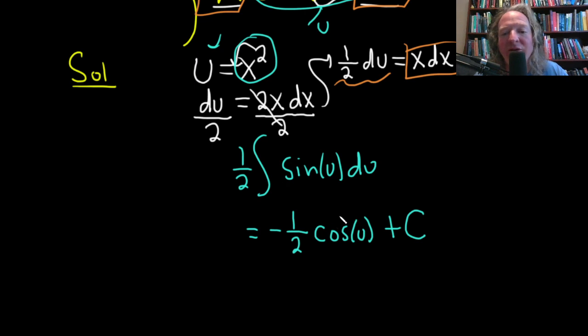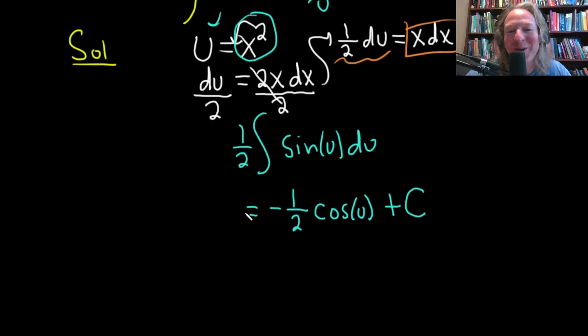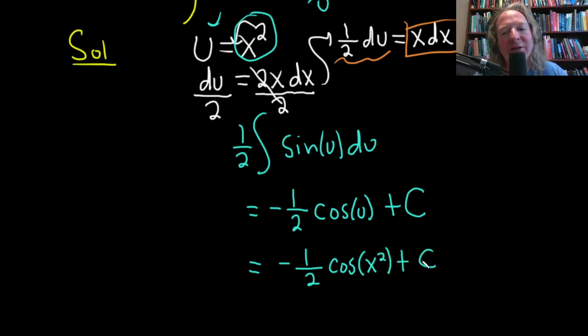And you can check this, right? The derivative of cosine is negative sine. There's already a negative here, so two negatives make a positive. And we're not done. We got to go back to the original variable. So this is negative one half cosine of, and then u is equal to x squared. So this is cosine of x squared plus our constant of integration capital C. Really nice.